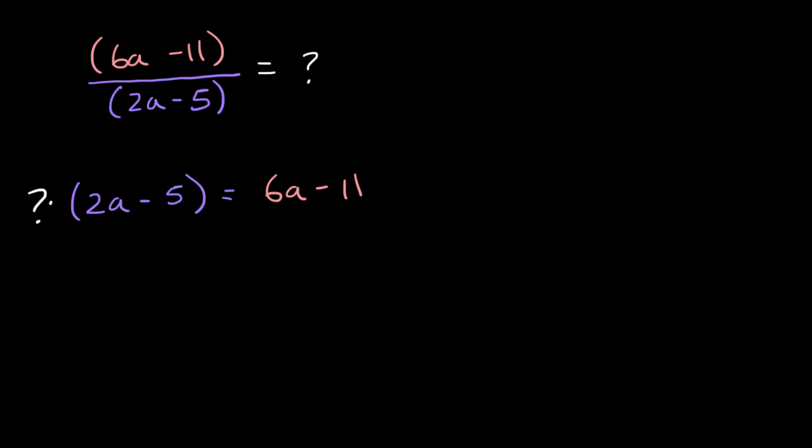So we could do the same idea. To go from 2a to 6a, I would multiply by three. Now we might be tempted to say, what happens if I multiply five by three? Well, that's not going to get us the exact same thing. That's actually going to be 15 or negative 15, not negative 11.